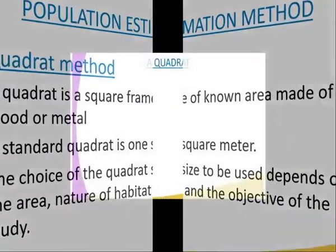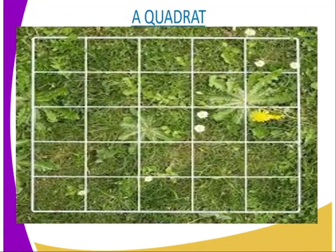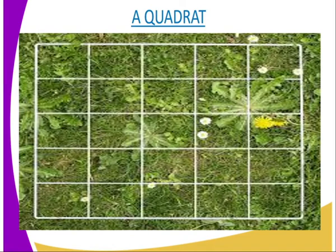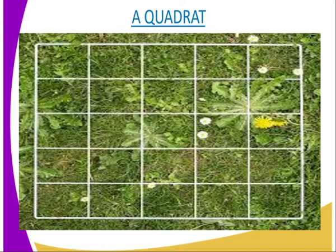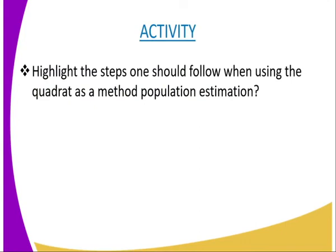To estimate population size using the quadrat method, follow this procedure. First, select a suitable study area. Second, mark the study area and measure its size. Third, stand in the middle of the study area, hold the quadrat aloft and throw it at random within the study area. Fourth, where the quadrat lands, identify and count all the living organisms enclosed within its boundaries and record the number of each species identified. Fifth, make several throws of the quadrat and repeat the previous step for each quadrat. Sixth, record the number of organisms in each throw. You are then required to highlight the steps one should follow when using the quadrat as a method of population estimation.